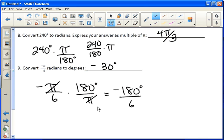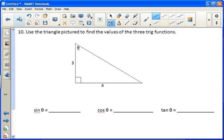Number 10, use the triangle picture to find the values of the three trig functions. Well, we need all three sides to do that, and we don't have this side. So I'll call it C, because we can use the Pythagorean theorem to solve for it.